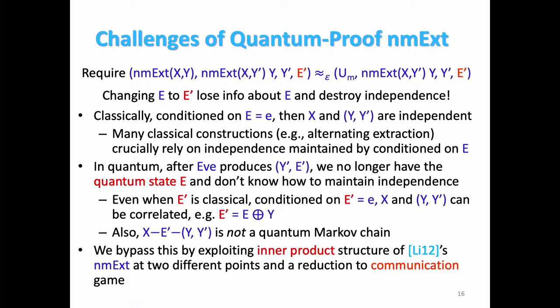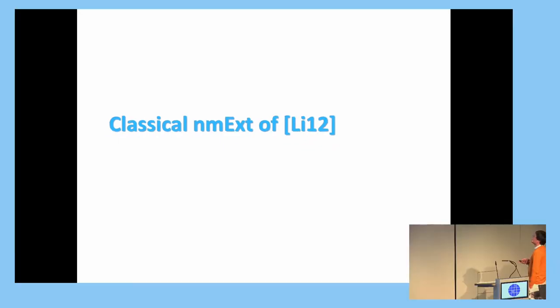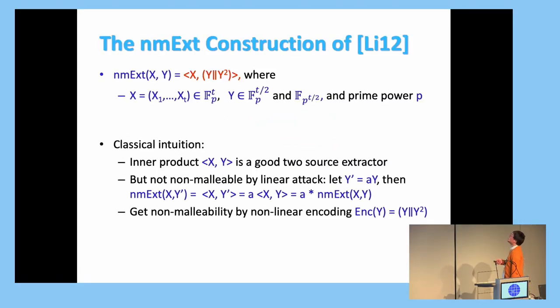So these don't quite work either. And so we bypassed this problem by exploiting the inner product structure of Li-12, the non-malleable extractor constructed by Li. And actually use this structure at two different points. And this is also done by a reduction to communication game.